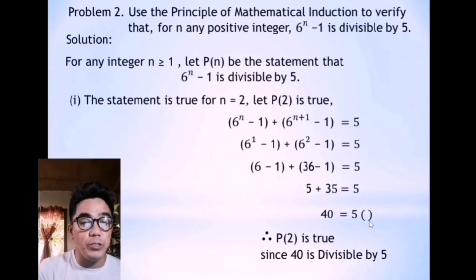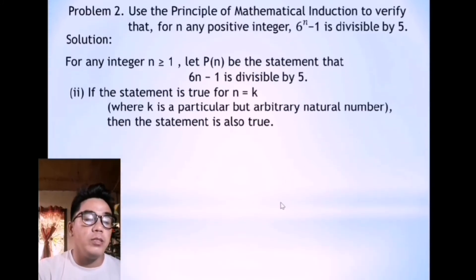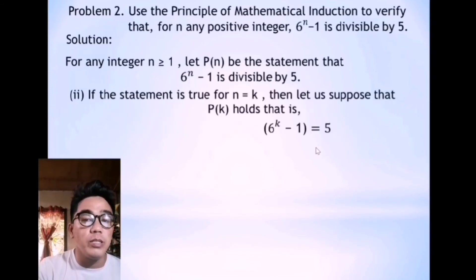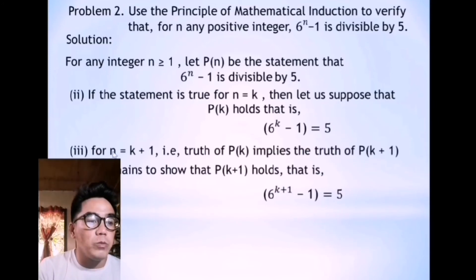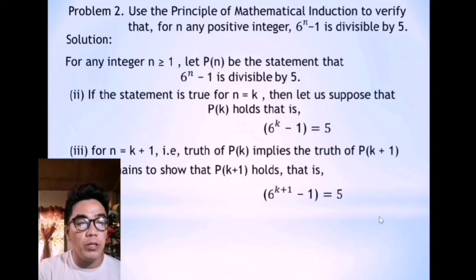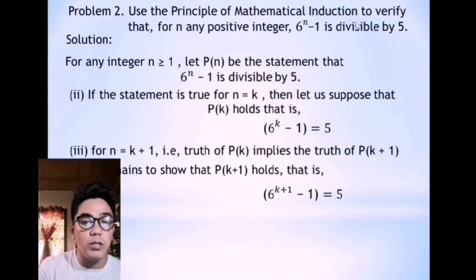Now let's move to the second step. The second step says: if the statement is true for n equals k, where k is a particular but arbitrary natural number, then the statement is also true. So we assume P of k is true, changing n to k. Consequently, for the third step, for n equals k plus 1, the truth of P of k implies the truth of P of k plus 1. It remains to show that P of k plus 1 holds — that is, 6 to the power of k plus 1 minus 1 equals 5.